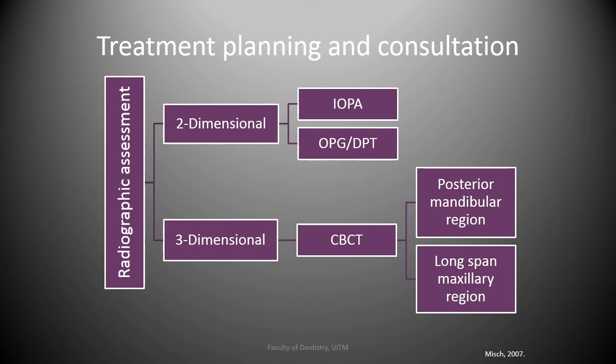Radiographic assessment can be categorized into two-dimensional and three-dimensional. 2D radiography is sufficient for simple cases and includes periapical views and orthopantomograms. 3D radiographic methods are indicated in specific situations, such as in the mandibular posterior region where the inferior alveolar nerve relation is important, and in the maxillary long-span edentulous region where bone width anteriorly might be insufficient and the relation to the sinus floor is important posteriorly.